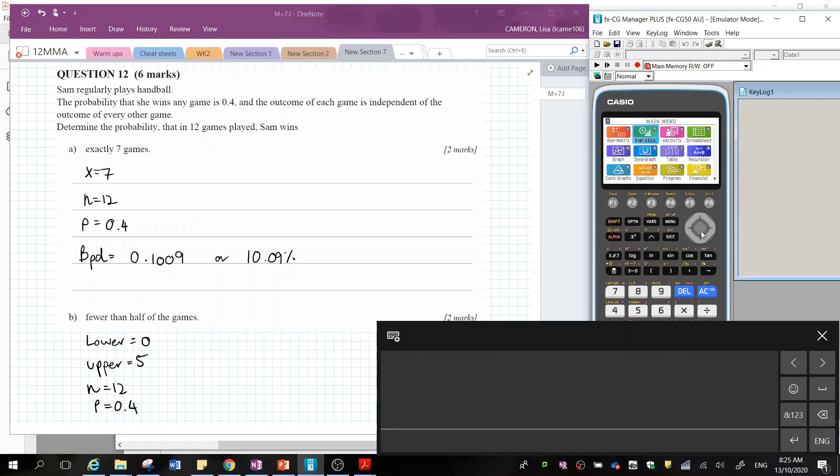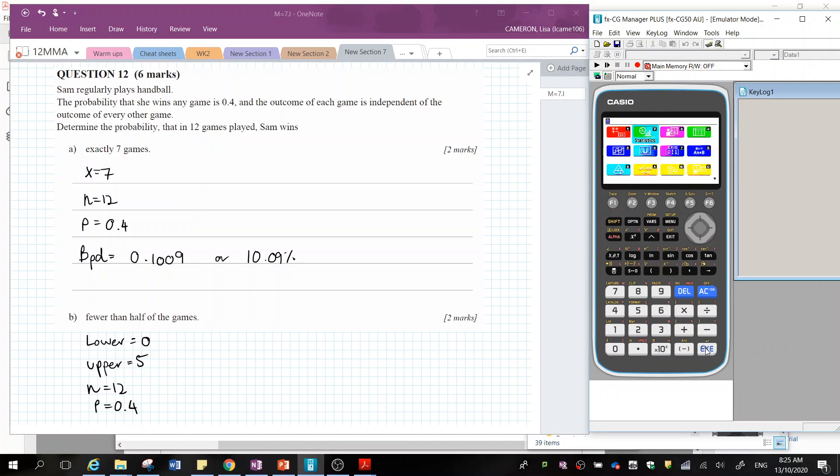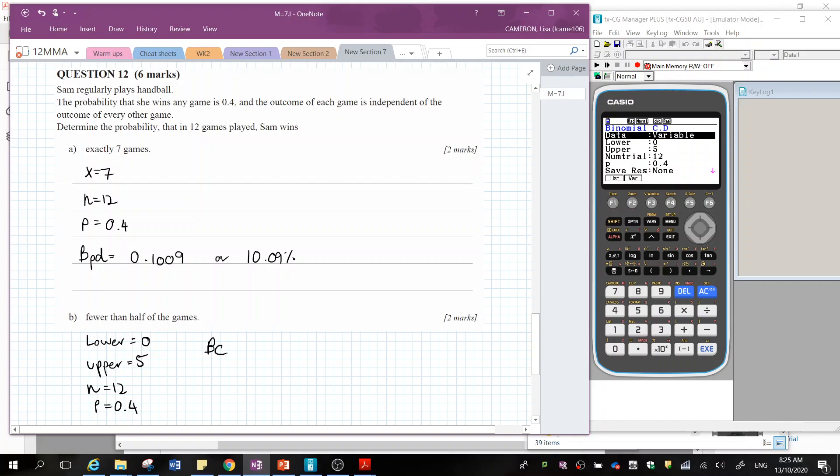So menu, statistics still. Okay, so I want to go distribution, binomial, BCD this time. So come on, BCD because we're testing the range.